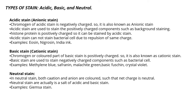There are three types of stains: acidic, basic, and neutral. Acidic stains are anionic stains — the chromogen of an acidic stain is negatively charged. Acidic stains are used to stain positively charged components such as background and histone proteins. Acidic stains cannot stain bacterial cells due to repulsion of the same charge, since the bacterial cell wall is also negatively charged. Examples include eosin, nigrosin, and India ink.